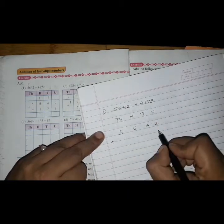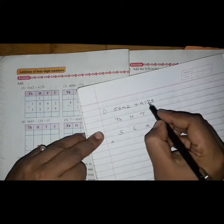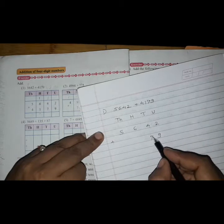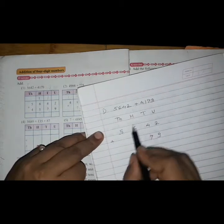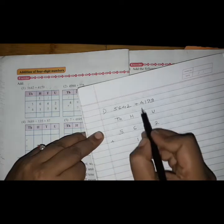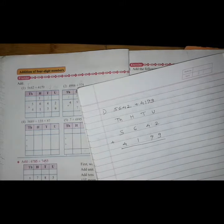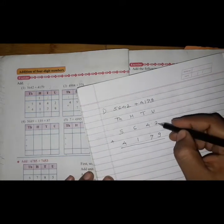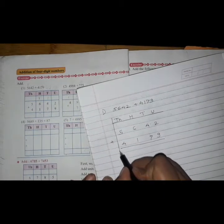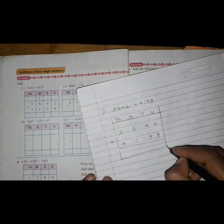So it is 100, 1000, 4000. Let's add 9 plus 2. Here we will make a box like this. Let's do it.